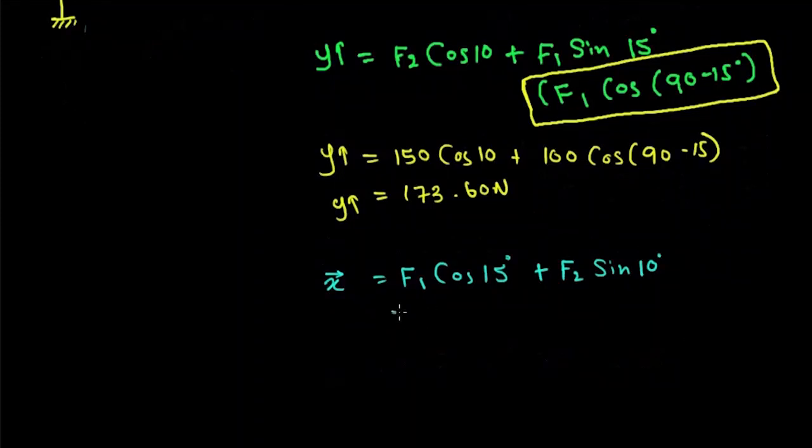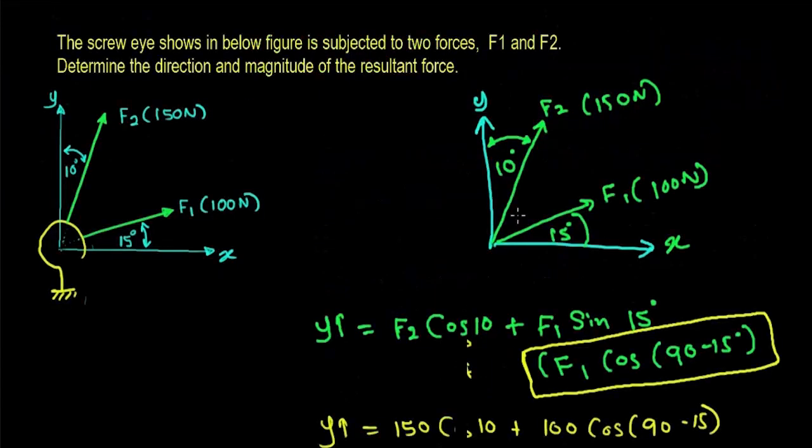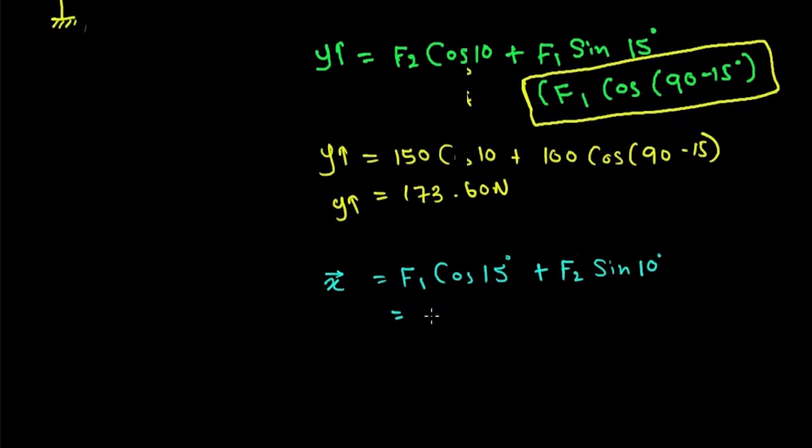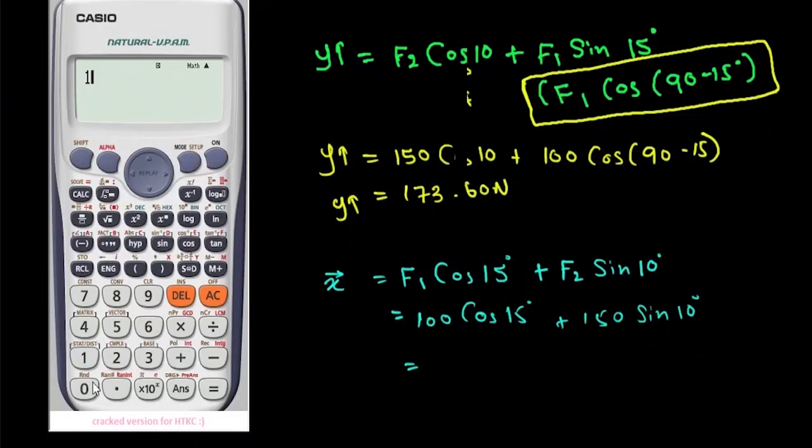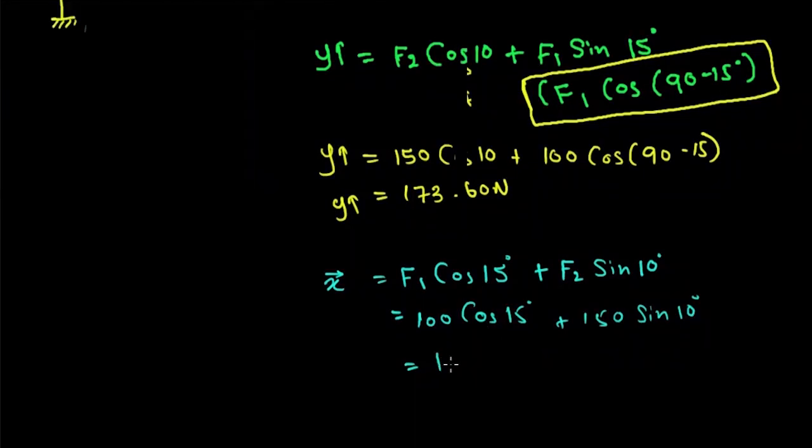F1 is equal to 100 Newton. So, 100 times cos 15 plus 150 times sin 10, which gives me 122.63 Newton.